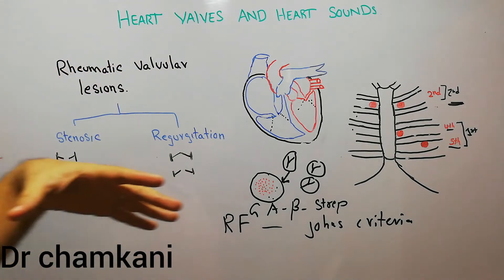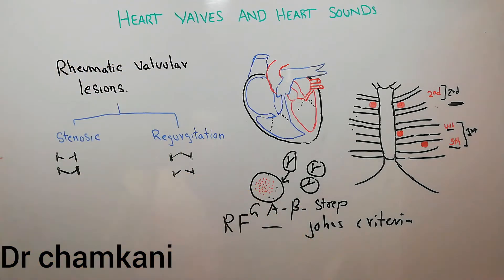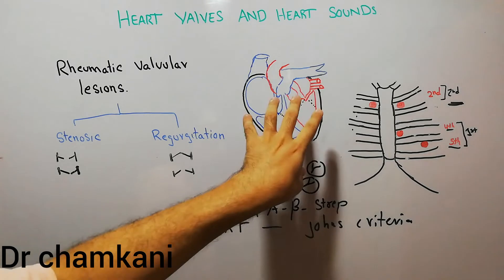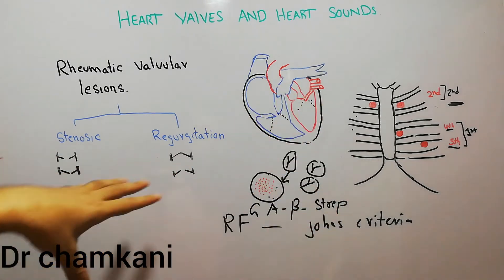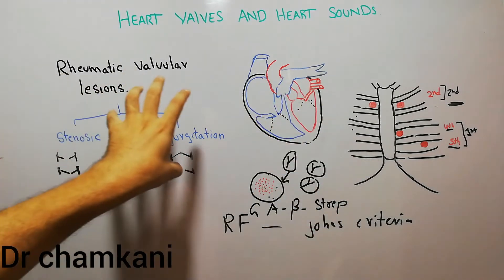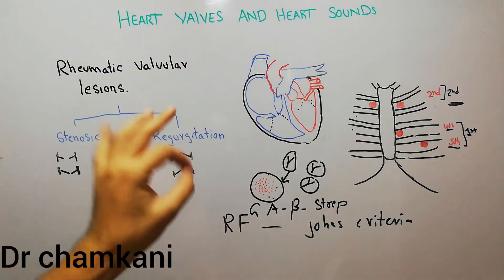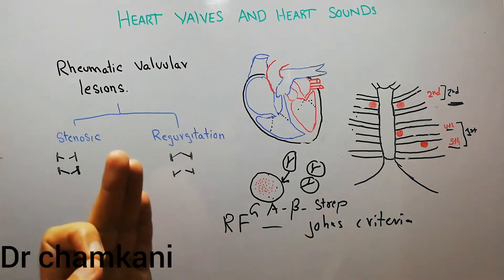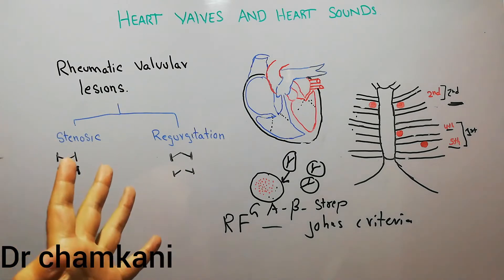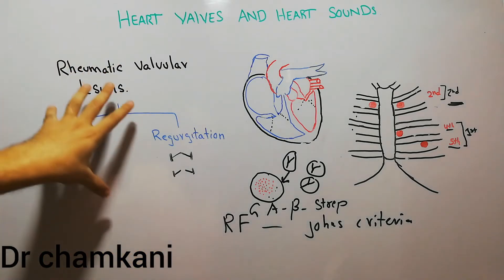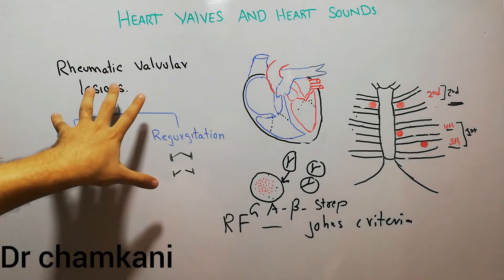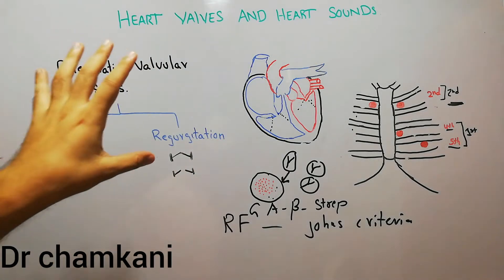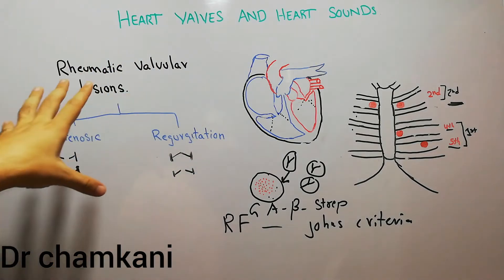We are discussing the physiology of the heart, so we must discuss some of the abnormalities which distort the physiology of the human body. Rheumatic fever is a very important condition.